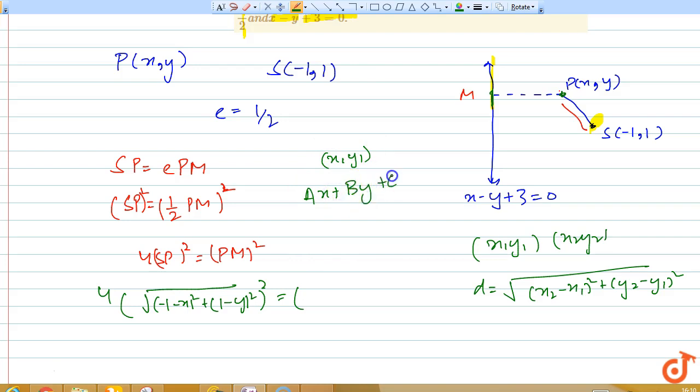Then the distance between the point and the line is given by the formula |ax₁ + by₁ + c| / √(a² + b²). Applying this formula here.